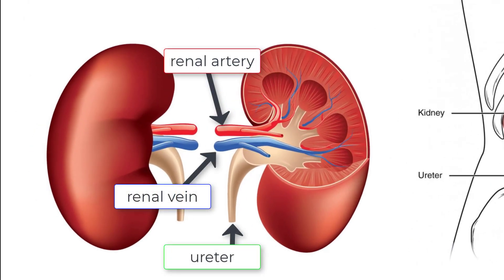The renal artery moves unfiltered, deoxygenated blood to the kidneys to be filtered and to supply the kidney tissue with oxygen, while the renal vein moves the deoxygenated blood from the kidney back to the inferior vena cava. The ureter then moves any waste products accumulated in the kidney, like urine, away from the organ to be excreted.